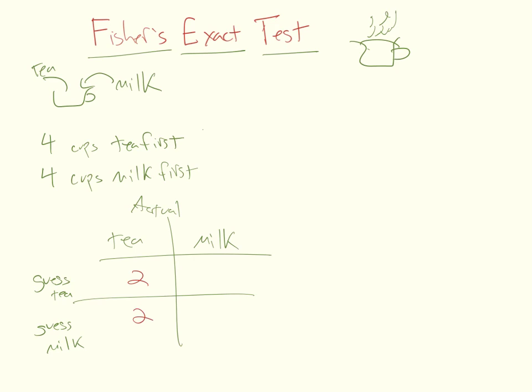So what he was expecting is she was going to guess something like this. There were four teas and four milks, and he thought she was going to end up guessing two and two. But what she actually guessed was not two and two, but something else. And so what we think she guessed is she got three right and maybe one wrong here and one wrong here and maybe three right there.